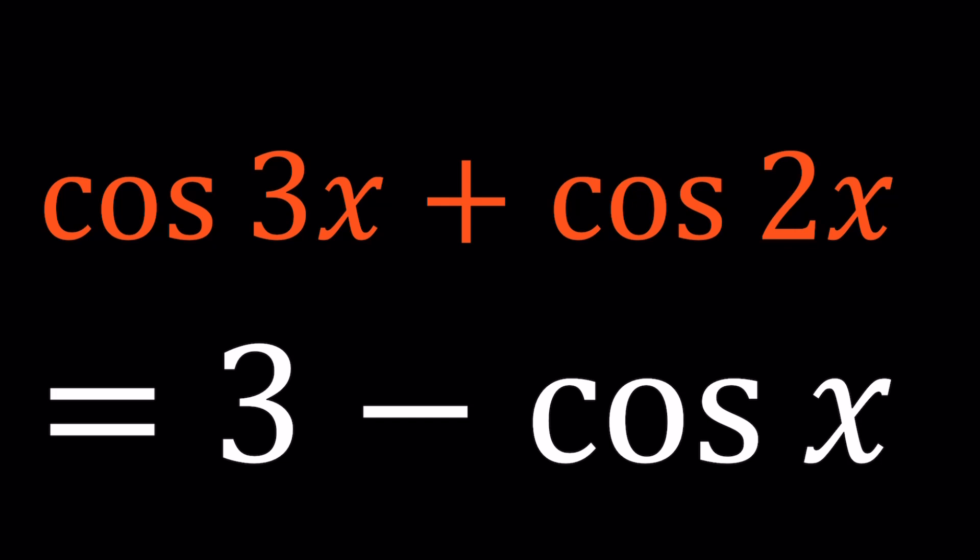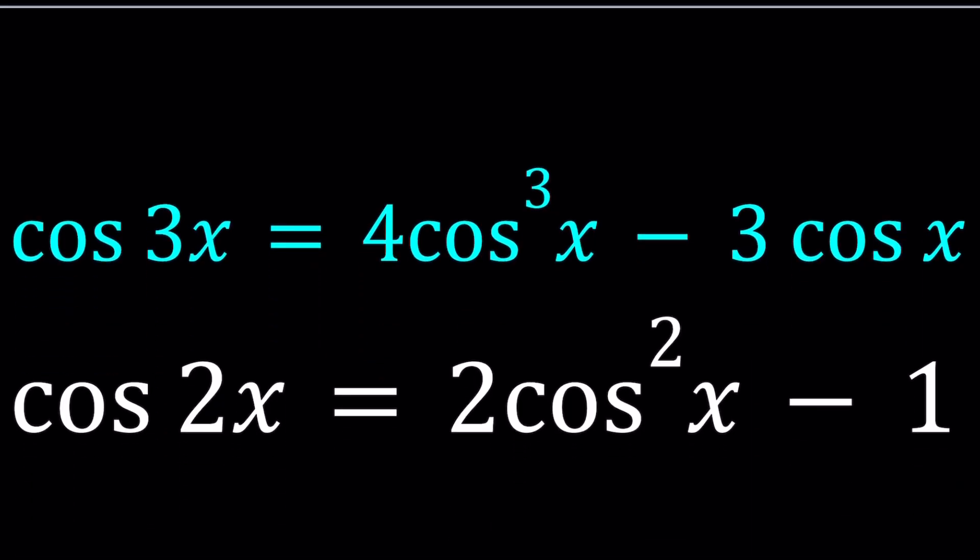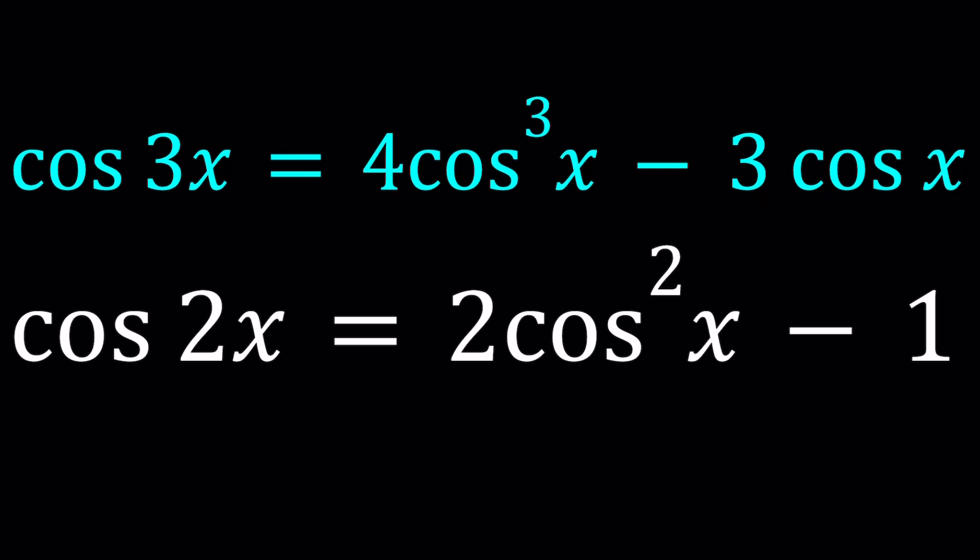So I'll be presenting two methods and let's start with the first one. For my first method I'm going to be using two formulas. Hopefully you are familiar with the triple angle formula for cosine and the double angle formula. There are three formulas for cosine of 2x but I want to use the one that contains cosine only, because I want to write everything in terms of cosine, in other words, powers of cosine.